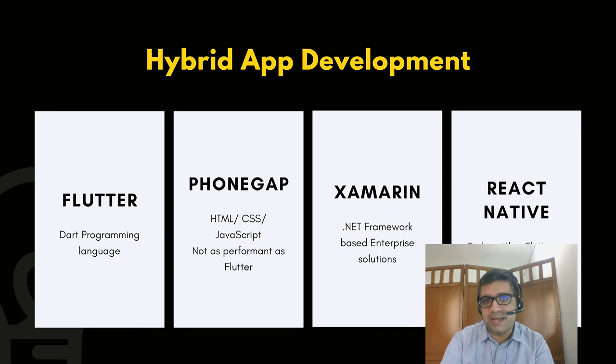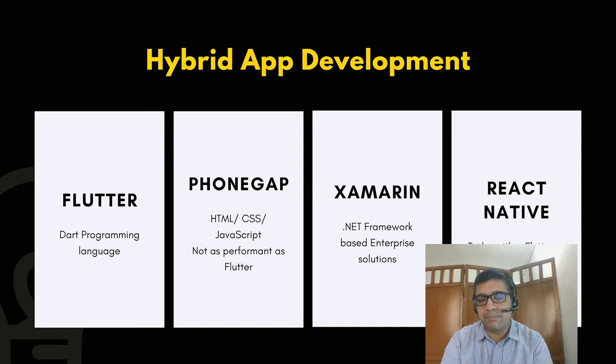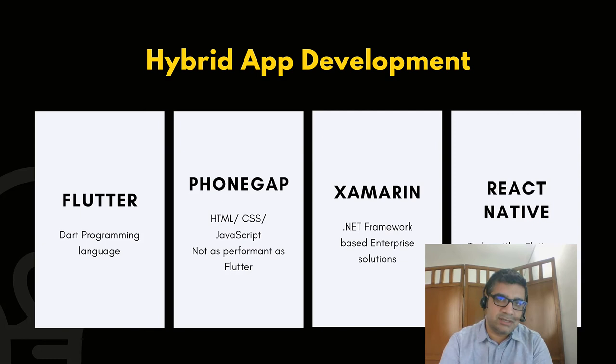Flutter is made by Google. They created a programming language called Dart for it, and it is very performant — many companies are now using Flutter for hybrid app development. PhoneGap was popular for a long time because web developers can use HTML, CSS, and JavaScript to build mobile applications, but the problem is it is not very performant — apps tend to load slowly — which is why many people are moving toward Flutter.